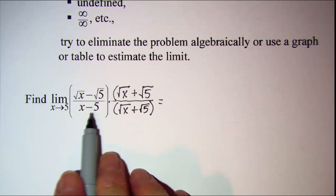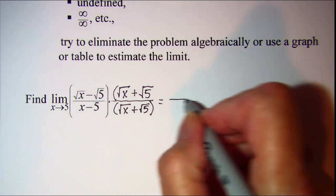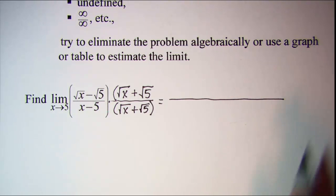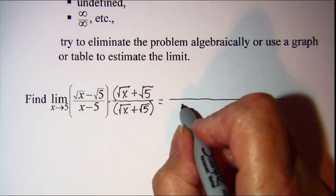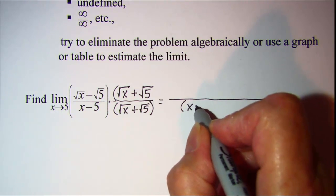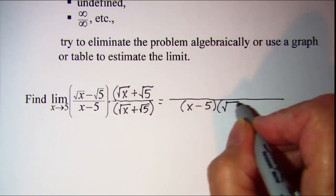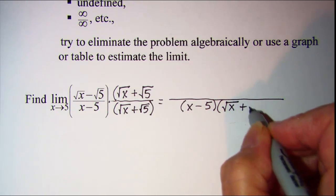Now don't actually multiply these out, because what we'll see is that something is going to cancel. So I'm going to leave the denominator as the quantity x minus 5 multiplied by the quantity root x plus root 5.